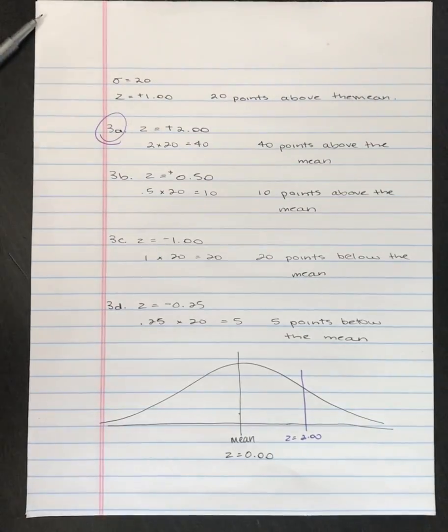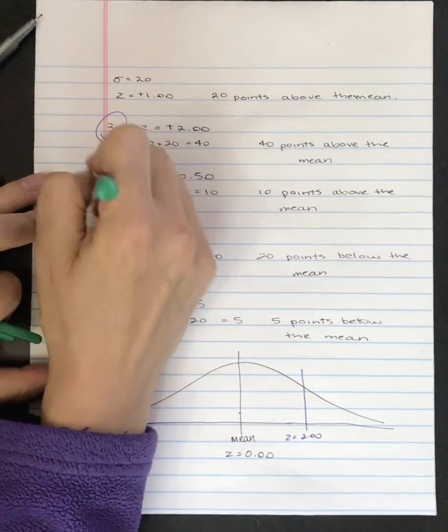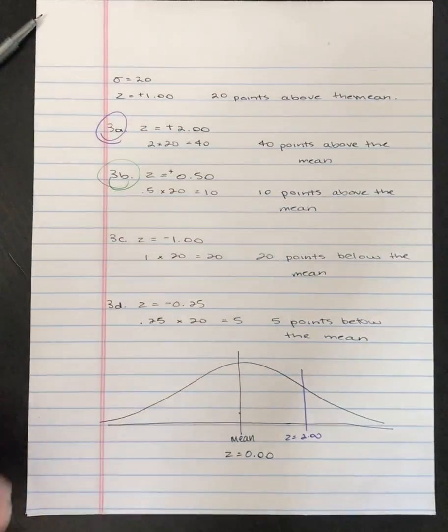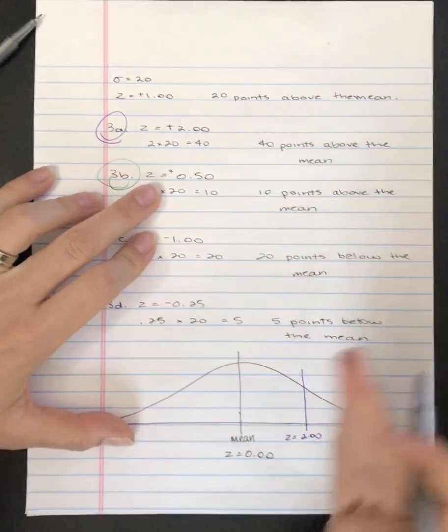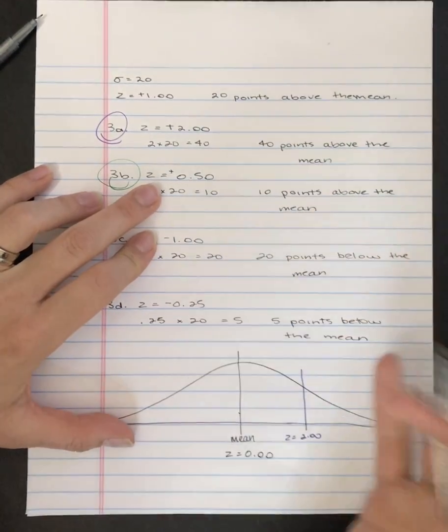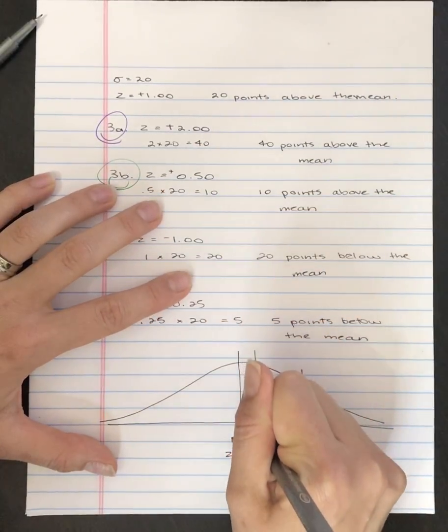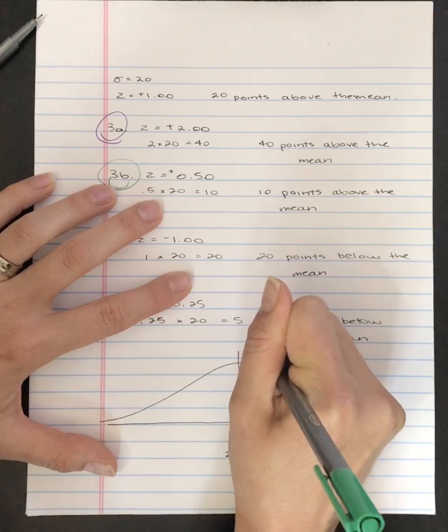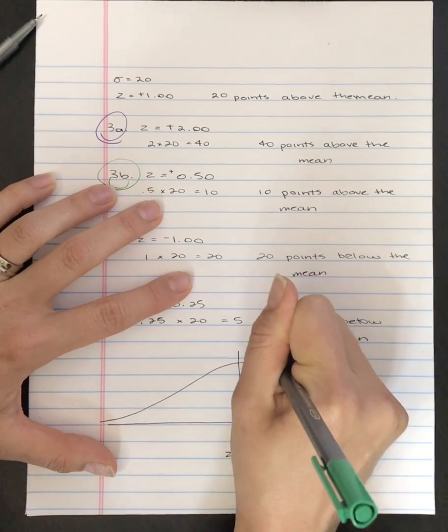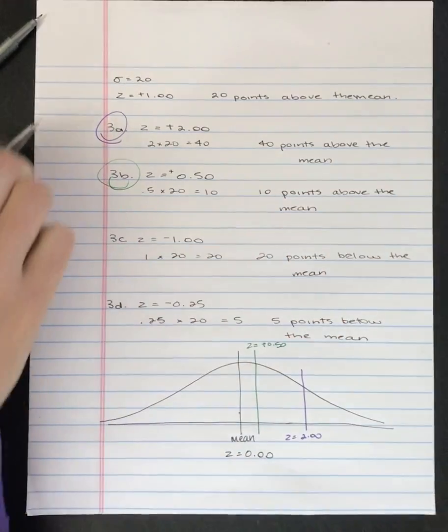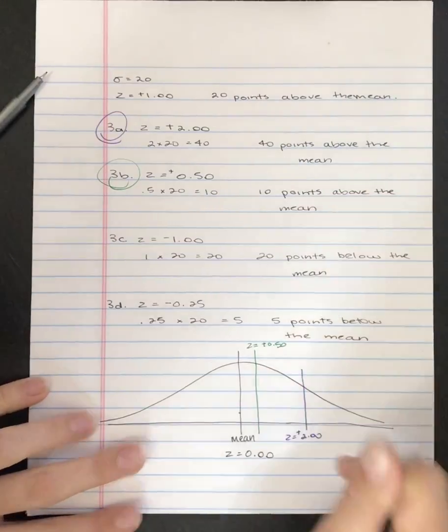A z-score of, let's call this in green, a z-score of 0.5 is also going to be to the right of the mean, but not by as much. It's only 10 instead of 40. So it's somewhere in here. Put a plus there.